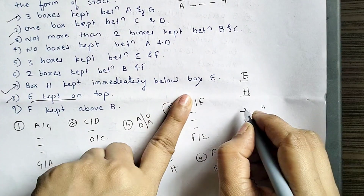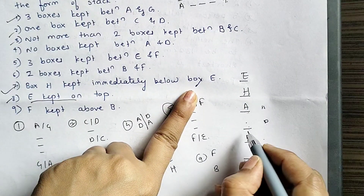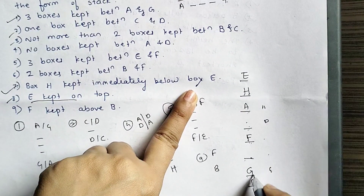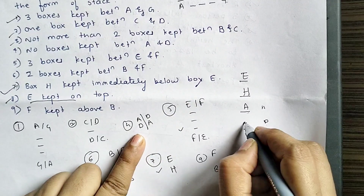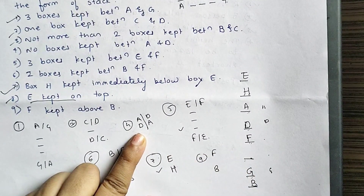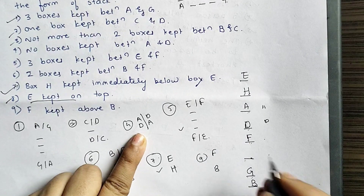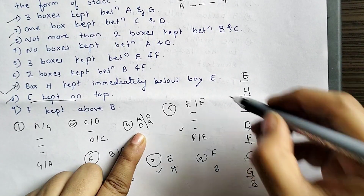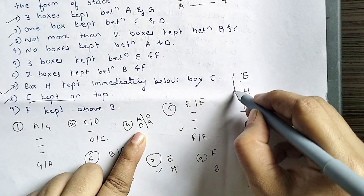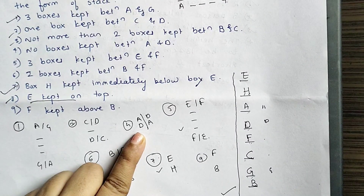This case is valid. A and G have 3 boxes between them, and here G falls into place. B is the immediate neighbor of A, and the remaining box is C. So this is the final arrangement. Final answer — let's confirm the solution.